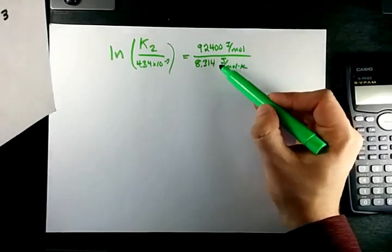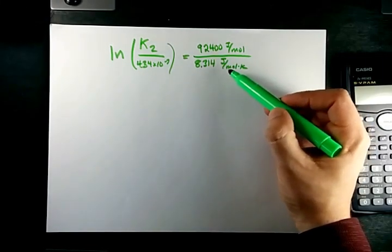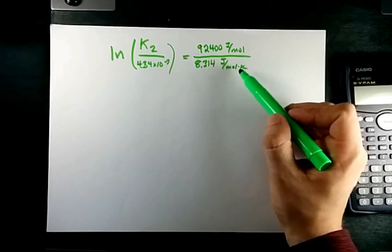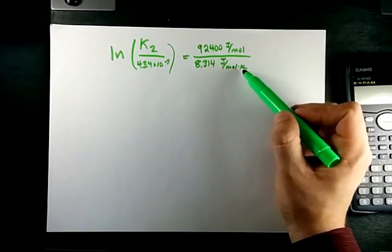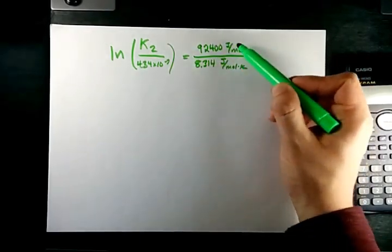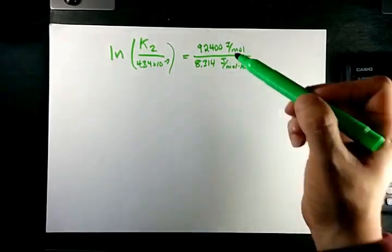The joules are going to cancel out, and the moles are going to cancel out, and my over Kelvin to the negative 1 flips the units of this whole thing into Kelvin.